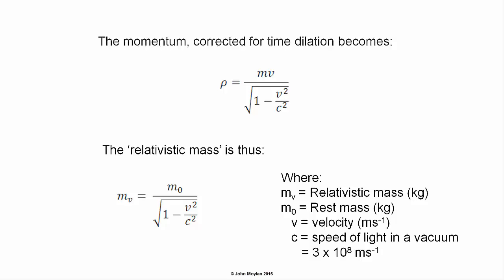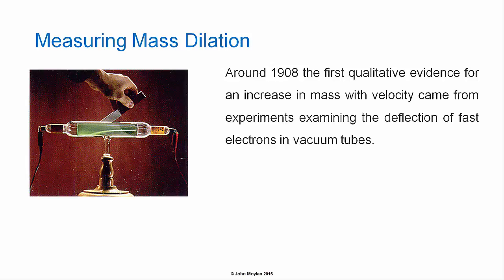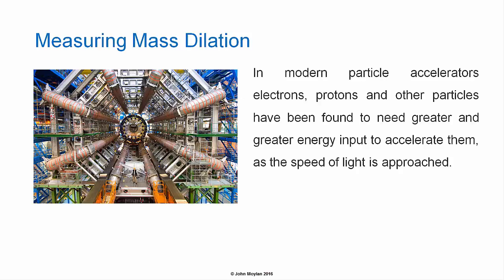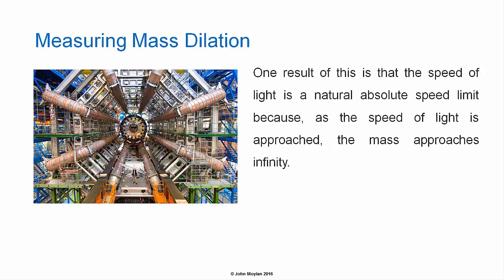Measuring mass dilation: around 1908, the first qualitative evidence for an increase in mass with velocity came from experiments examining the deflection of fast electrons in vacuum tubes. These particles had higher momentum than could be accounted for by the rest mass. In modern particle accelerators, electrons, protons, and other particles have been found to need greater and greater energy input to accelerate them as the speed of light is approached.